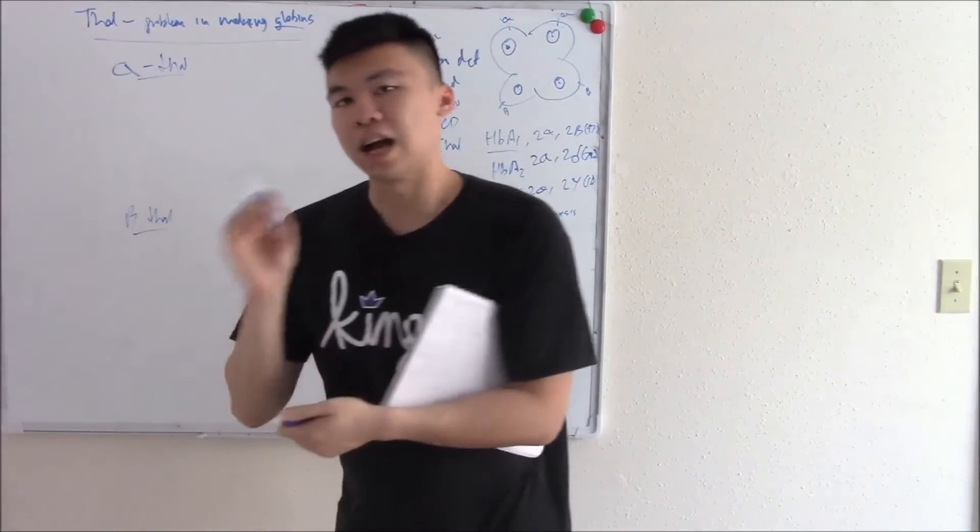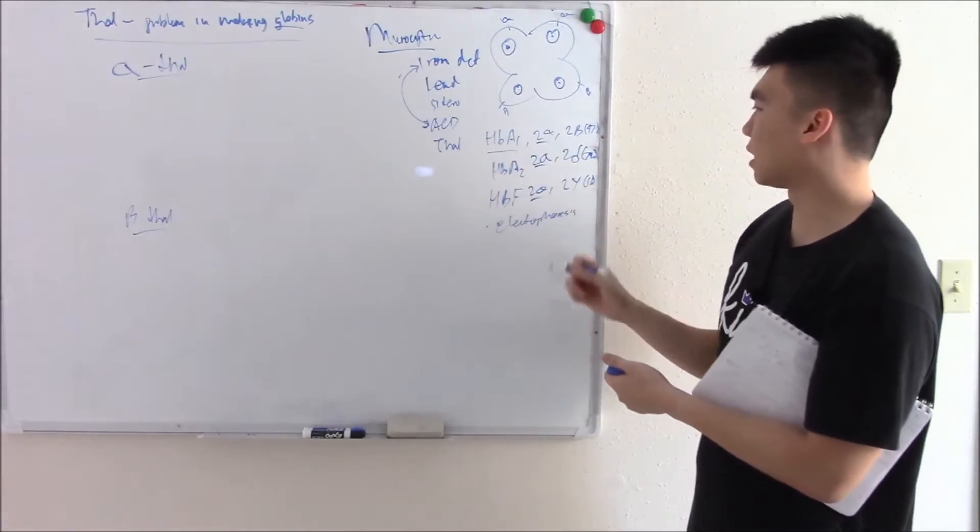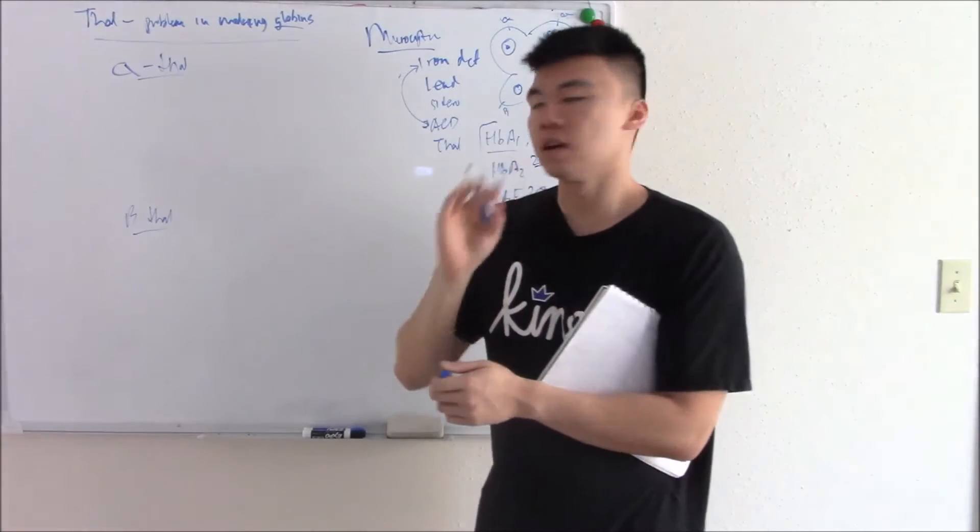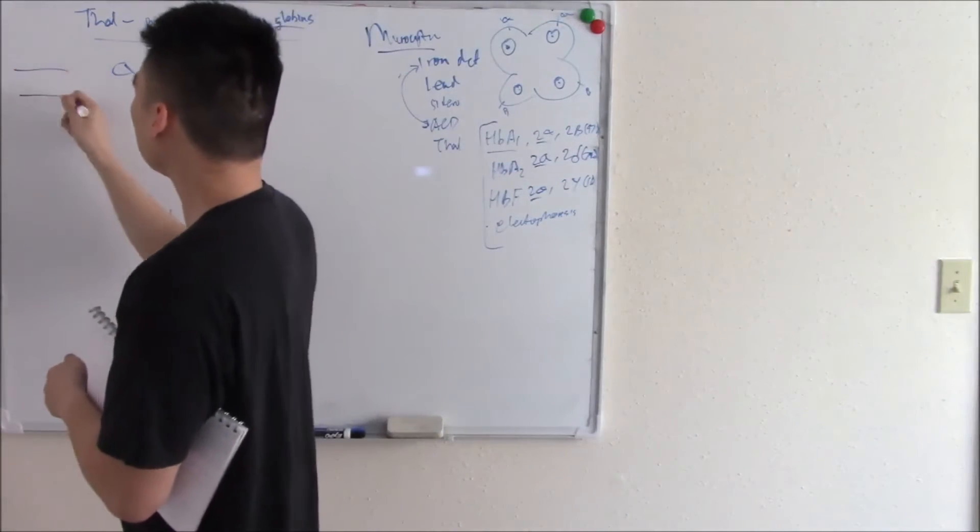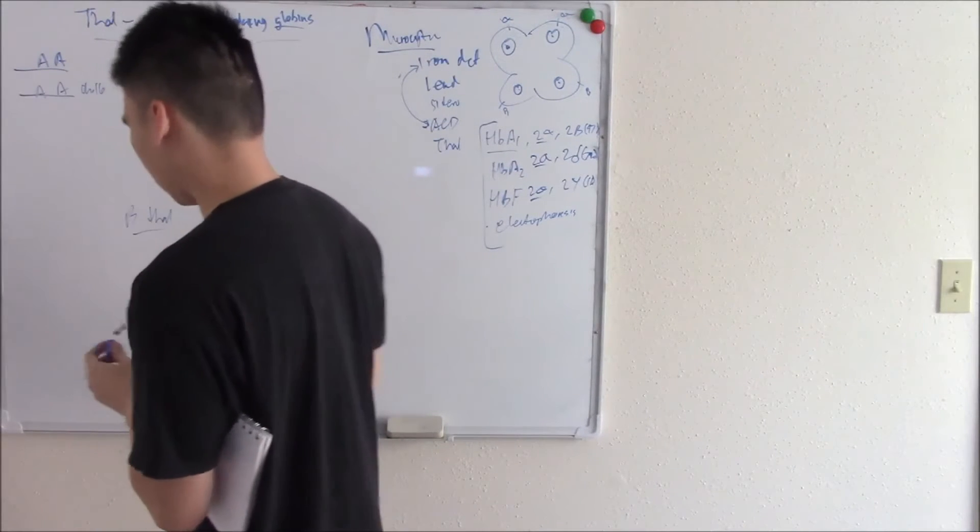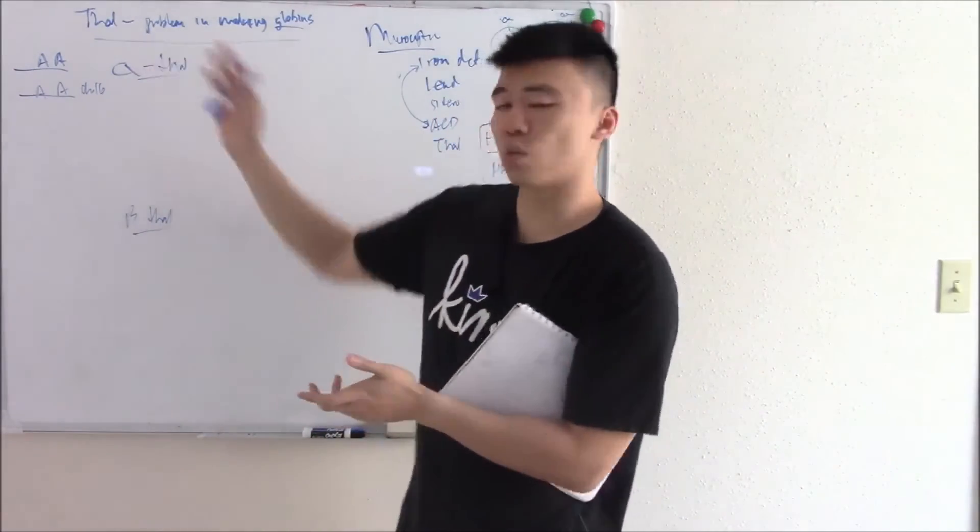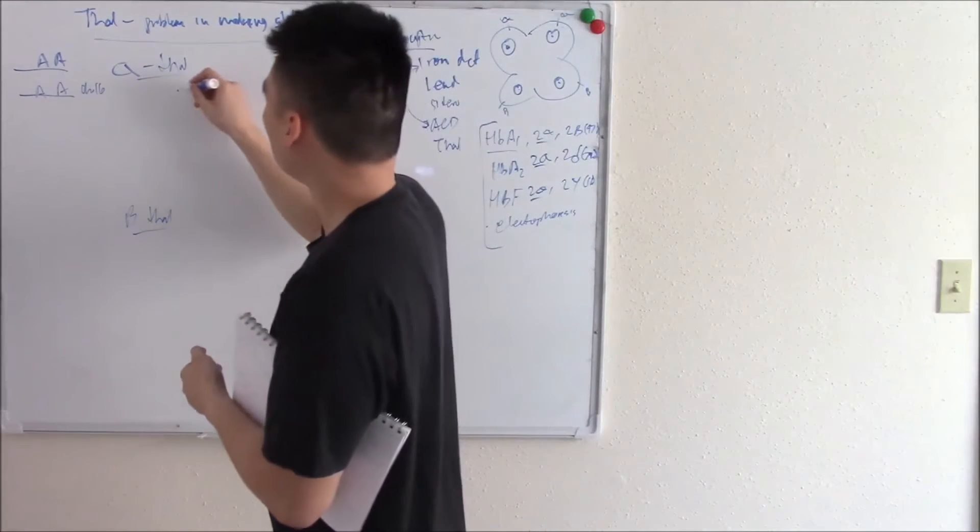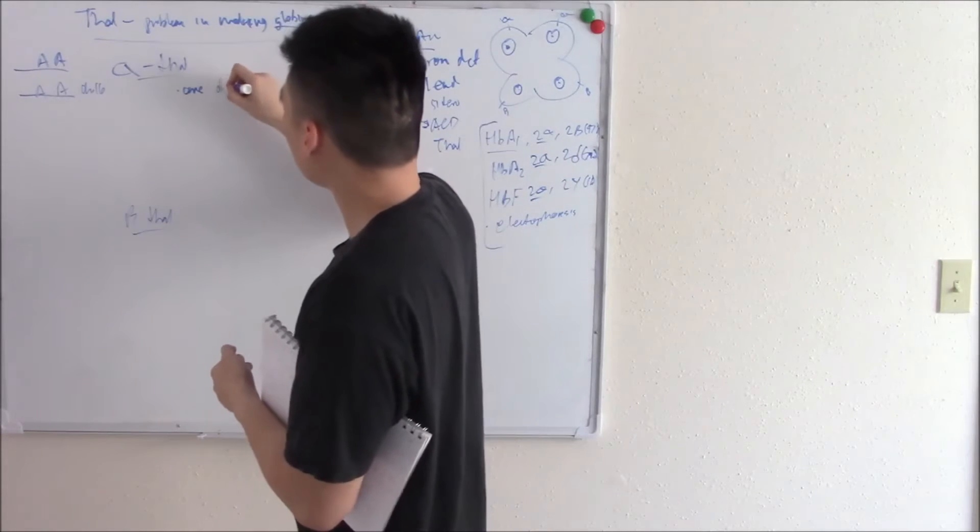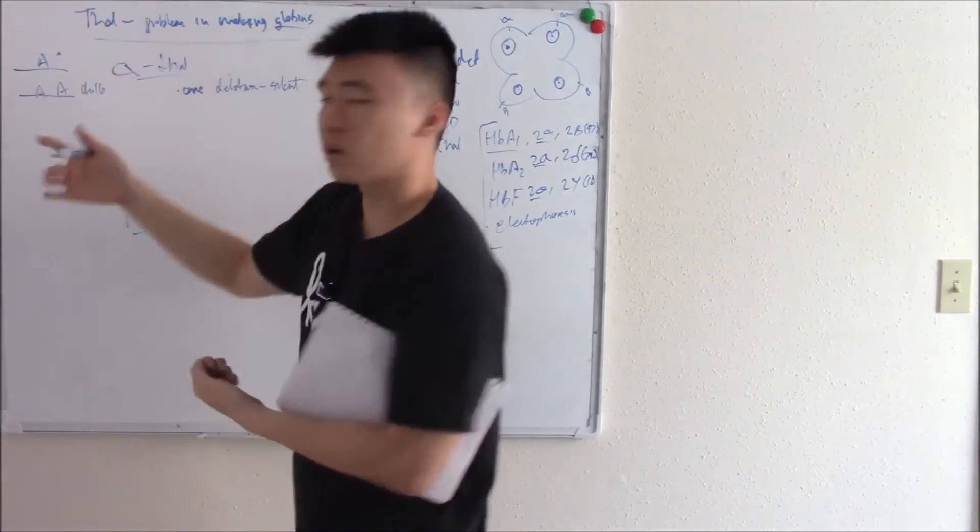Let's talk about alpha-thal. Alpha globin is incredibly important. It's like the backbone of all your globin chains. And so it's so important we have four alleles that control it. Four different alleles on chromosome 16. And the degree of alpha-thalassemia depends on how many of those alleles are deleted. If you delete one, we just call that a silent carrier. It's not even a problem. You have three more to take its place.